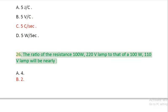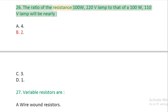Question 26: The ratio of the resistance of a 100 watt, 220 volts lamp to that of a 100 watt, 110 volts lamp will be nearly: A: 4. B: 2. C: 3. D: 1.